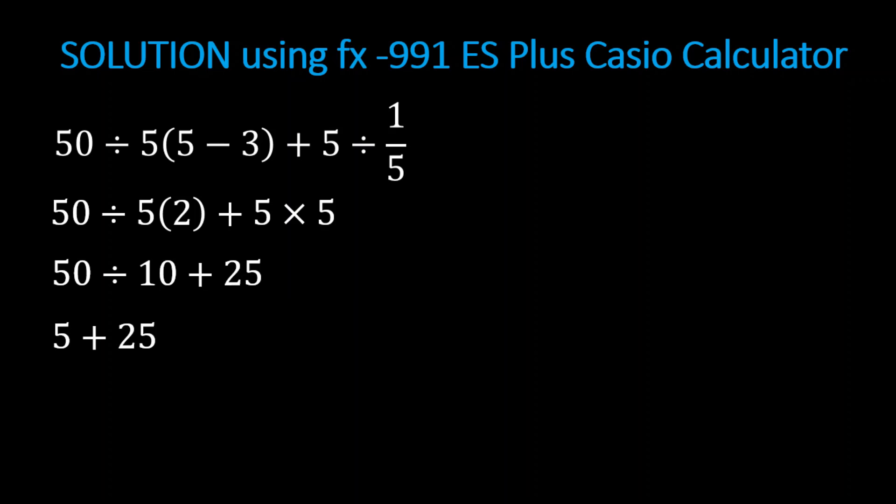So what can we conclude about this problem? The best way to ensure that you're going to get the desired result of your expression is to make sure that it is clearly written with the right symbols. For example, the problem could have been written as 50 times parenthesis 5 minus 3 over 5 plus 5 over the fraction 1 fifth.